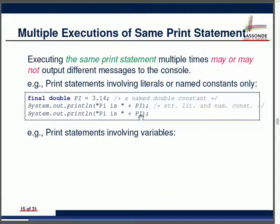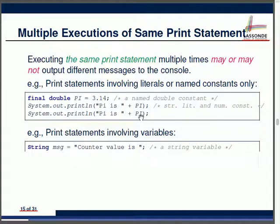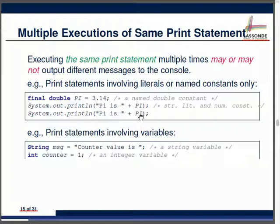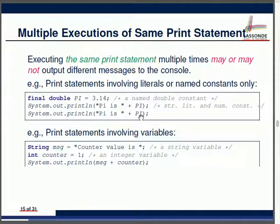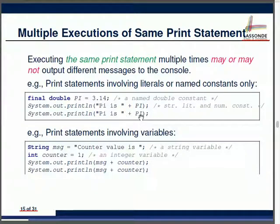The first print statement outputs 'PI is 3.14'. For the second print statement, the 'PI is' part is a string literal, and the PI constant value can never change, so both print statements give the same output. Now let's look at a similar example involving variables. If we have a variable counter initialized to 1, two print statements without changing the value in between will both output 'counter is 1'.